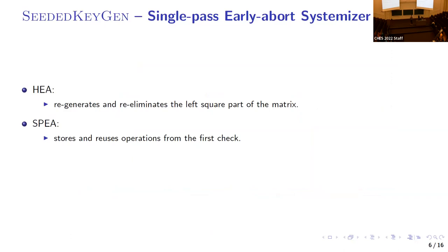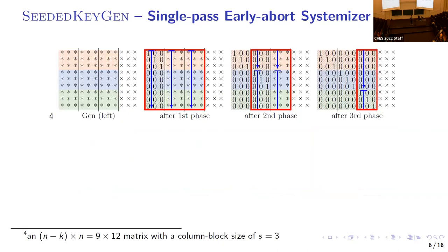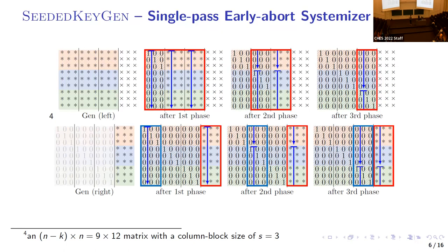The single-pass early-abort (SPS) systemizer avoids wasted operations by storing and reusing the operations from the first check. It generates and systemizes the left square part first; the operations are stored back to the original pivoting column, while operations for implementation are maintained in additional list memory. On success, it generates only the right part of the matrix and replays those operations sequentially. SPS avoids redundant operations with little memory overhead but takes more time for failure detection due to the single-pass scheme.